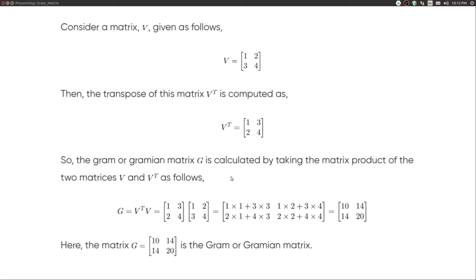So the Gram or Gramian matrix G is calculated by taking the matrix product of the two matrices V and V^T as follows: G = V^T multiplied by V, and it's a dot product between these two matrices, and ultimately I get the result.